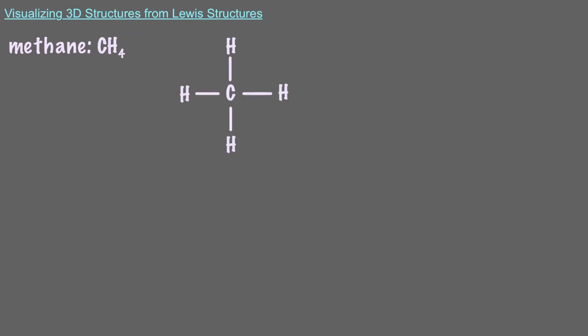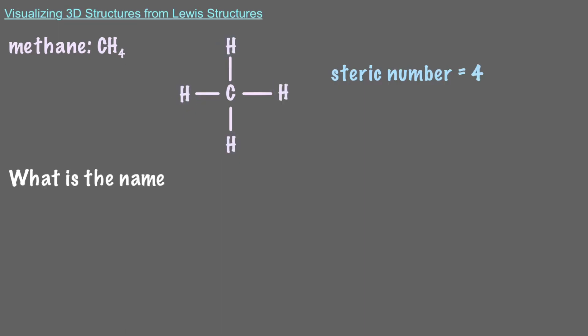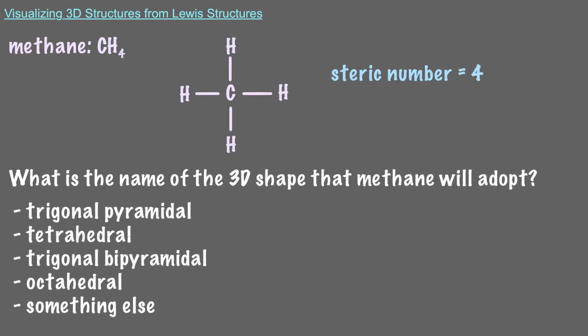Let's start by taking methane as an example. The molecular formula of methane is CH4, and this is its Lewis structure. Since we have four things attached to the central atom, the steric number for this molecule is 4. Since we have a steric number of 4 and there are no lone electron pairs in this molecule, it's classified as AX4. A is our central atom, and the four X's represent the four hydrogens we have attached to it. That means the shape of our molecule is tetrahedral.